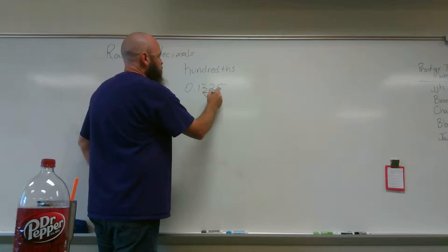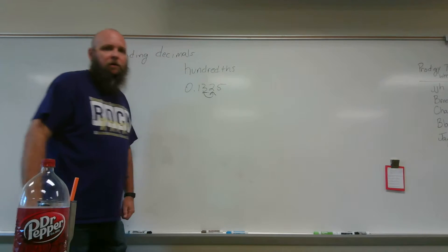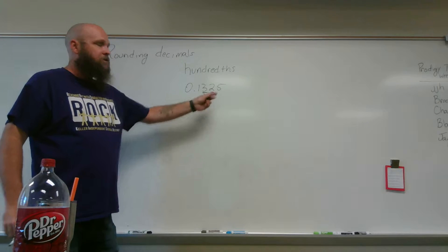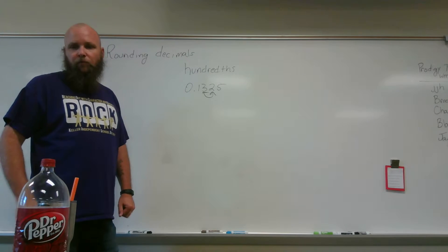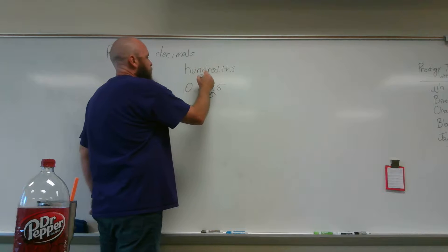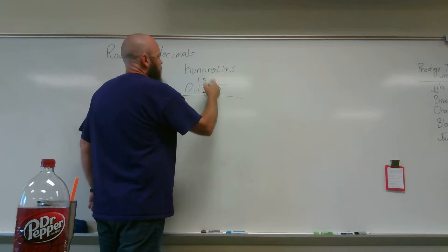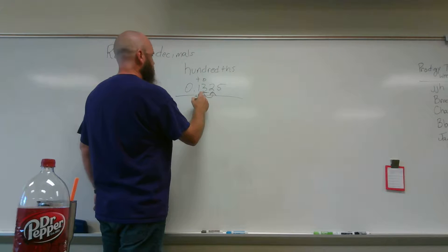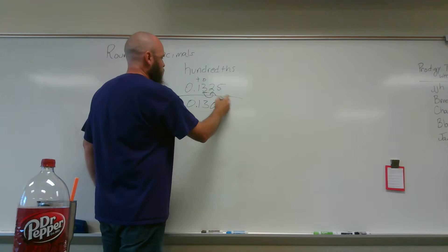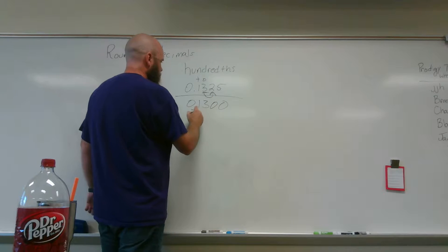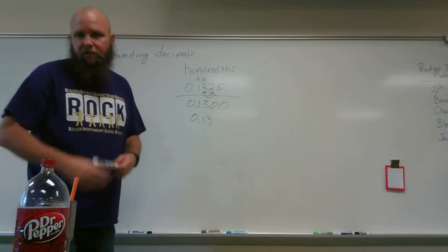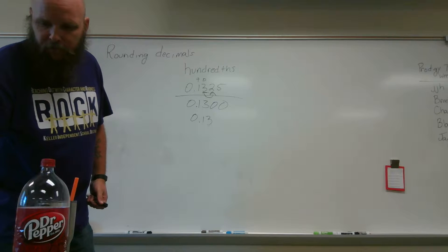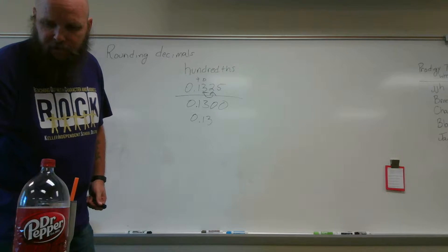We look next door. Is the number next door five or greater? No. So we don't add one more, we just add zero. The numbers in front stay the same. Numbers behind — zero's your name. Or, as you'll see it written: zero and thirteen hundredths.